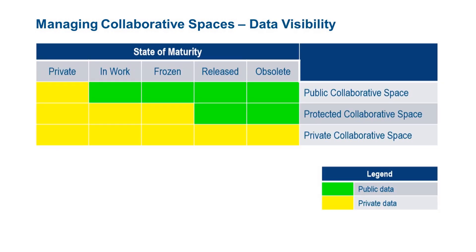The visibility of data within collaborative spaces is controlled by the maturity state of an object. As the maturity state progresses, visibility increases. The exception is in a private collaborative space, where the data is always private.